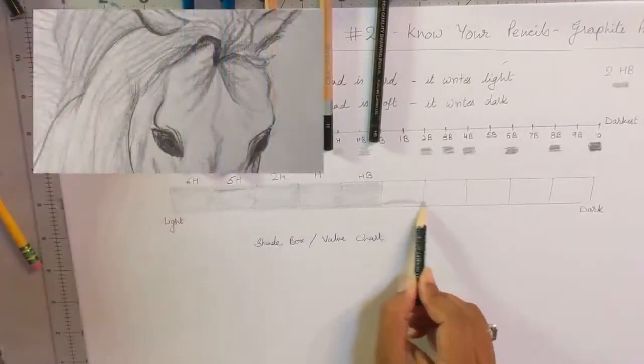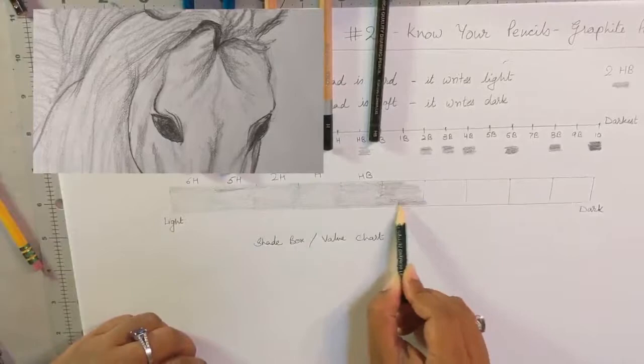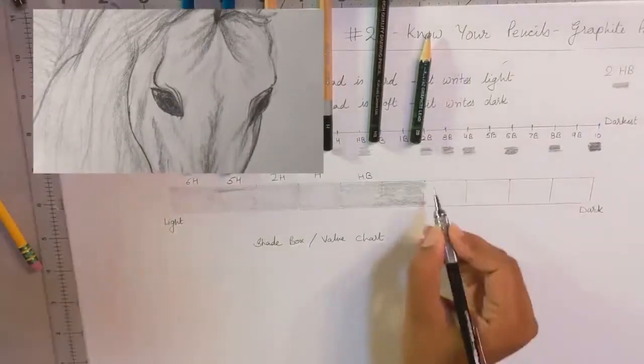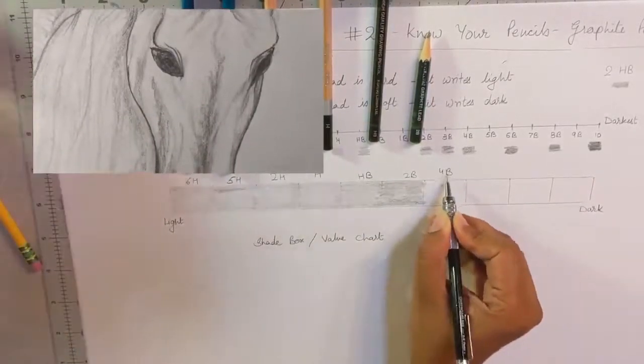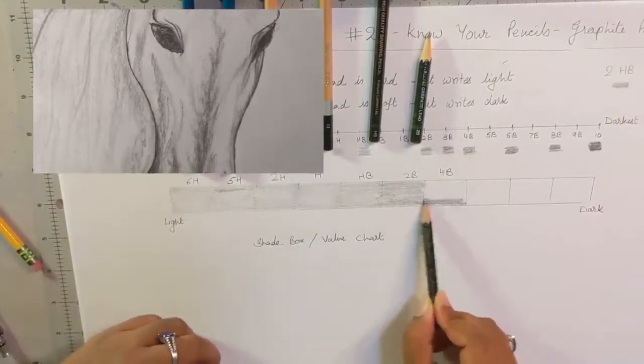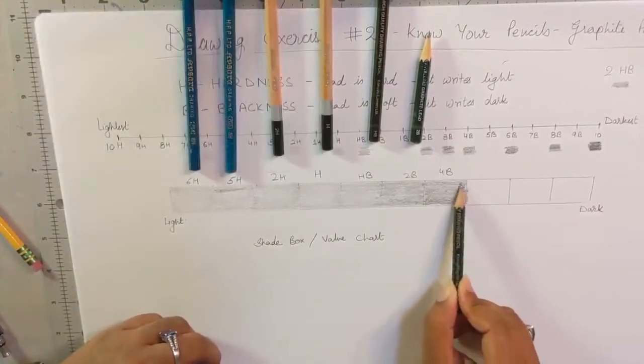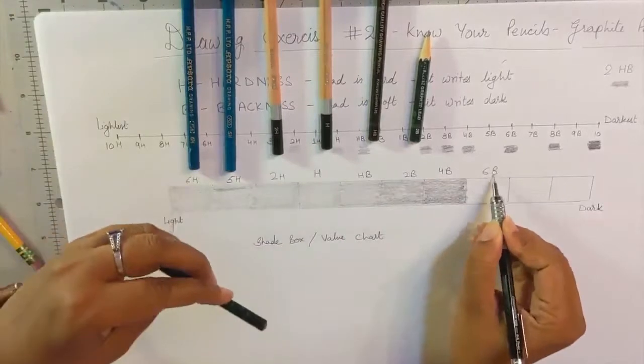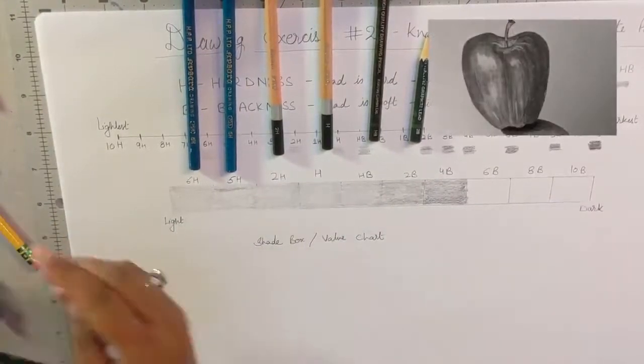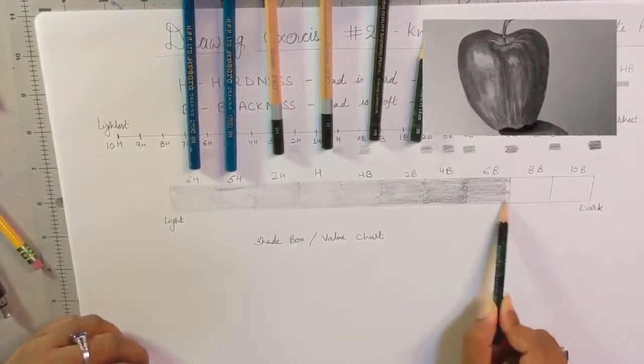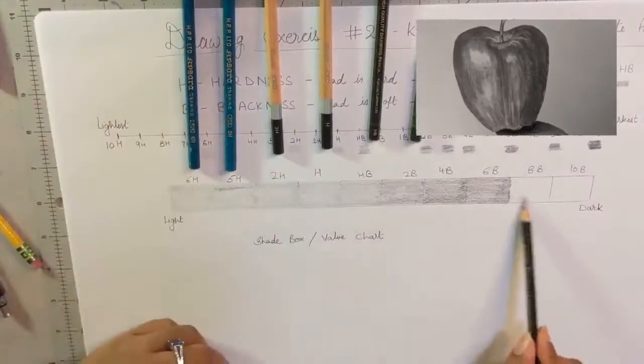It depends on your artwork—what kind of value you want. Like in this horse, you are using little H to B pencil. If you want a little darker shade, you choose generally 4B's, 6B's, and 8B's—they are pretty dark.